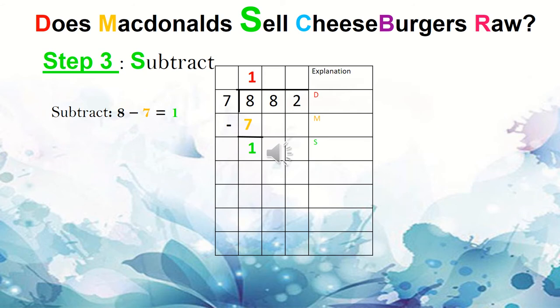Let me say that again. Step 2, multiply. We multiply the 1 on top to the divisor 7. 1 times 7 equals 7. We write it below the 8. So from Does McDonald's Sell Cheeseburgers Raw, we've completed Does McDonald's. Now we move on to the word Sell. And it starts with an S. And step 3 is subtract. So we've completed step 1 and 2. Now we subtract 8 minus 7. We see a line. Below the line, we write the answer to 8 subtract 7. And the answer to 8 subtract 7 is 1.